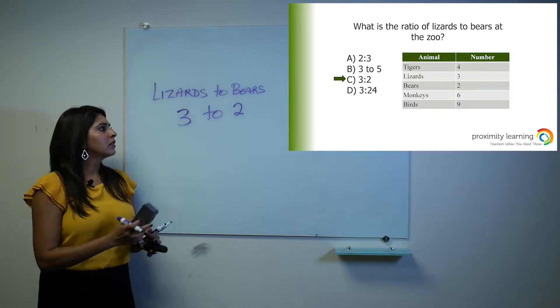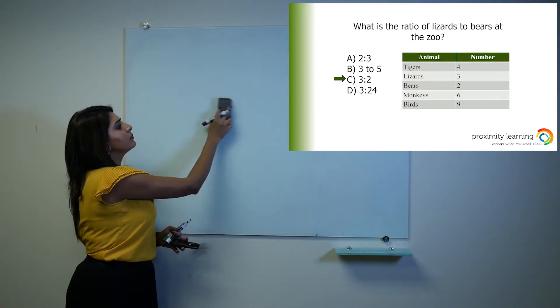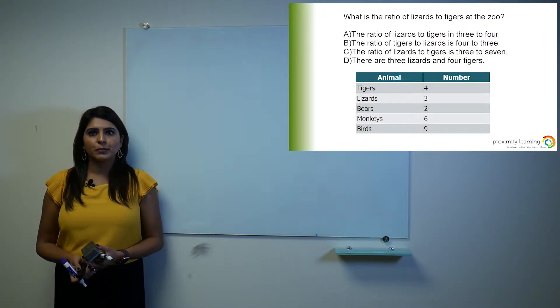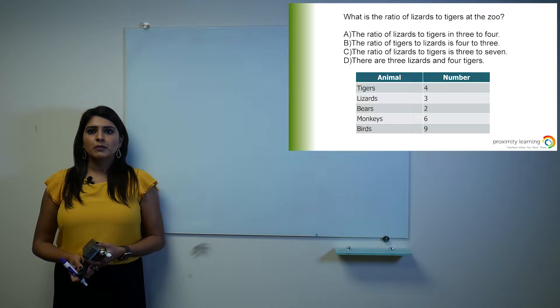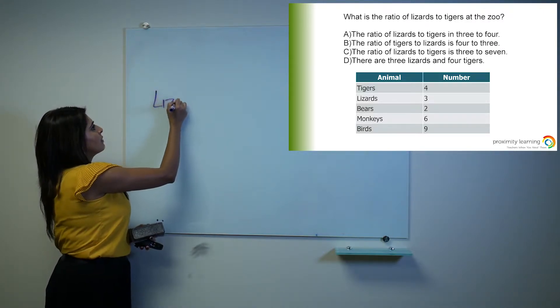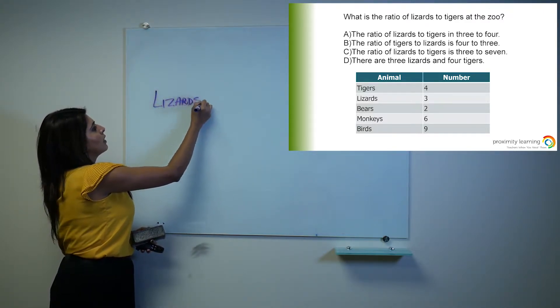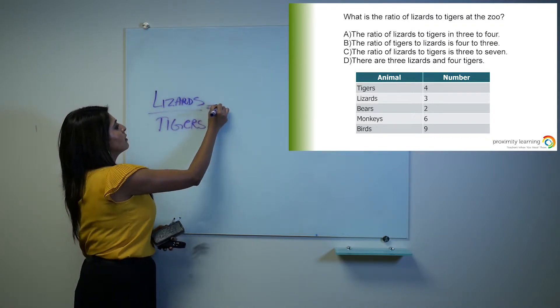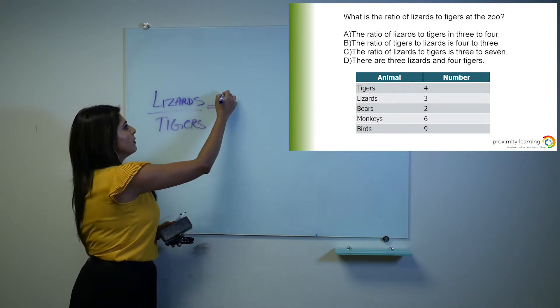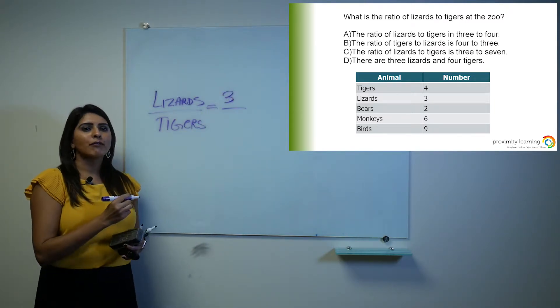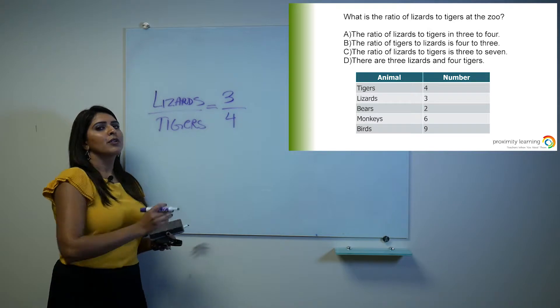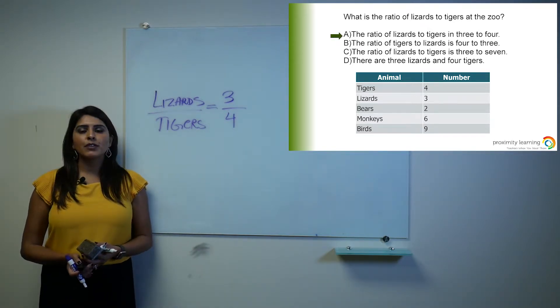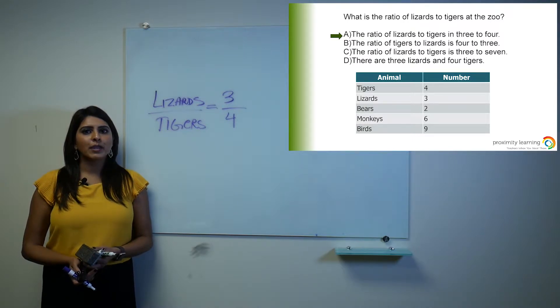Let's try another example. What is the ratio of lizards to tigers at the zoo? We're going to go ahead and identify how many lizards there are in our table. There's a total of three. There are four tigers. So your final answer is the ratio of lizards to tigers is 3 to 4, which is answer choice A.